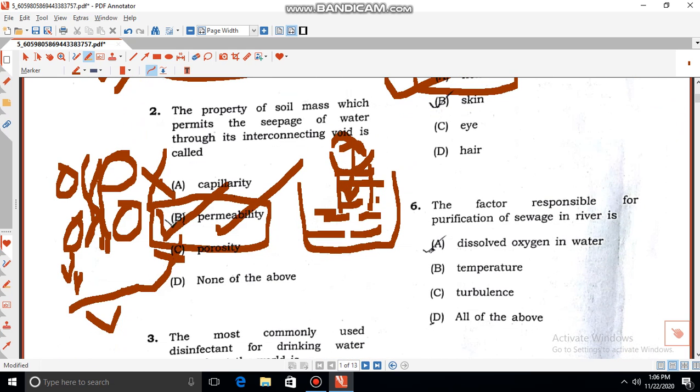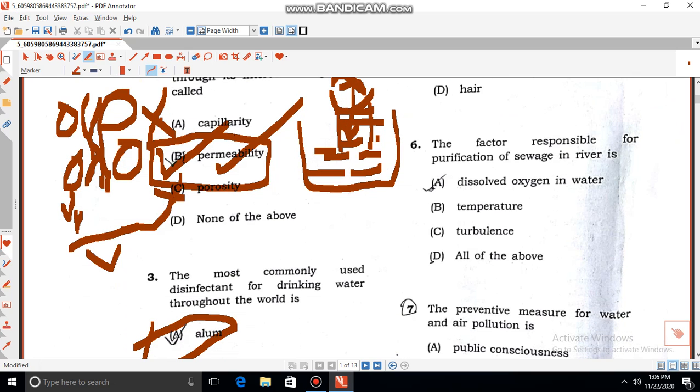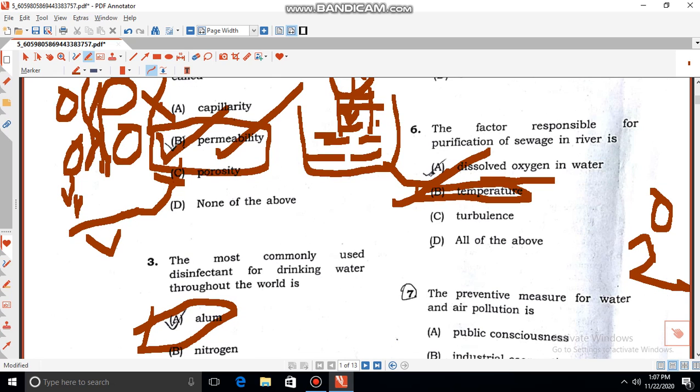Then, the factor responsible for purification of sewage in river. So if we use sewage in river, then the river can automatically clean the sewage. The main reason is that we have dissolved oxygen. The dissolved oxygen can reduce sewage. We need to keep the water flow. So in the river, we need to keep the water flow with turbulence. The water will mix, so we need all these for purification. So the three options - our answer is all of the above.